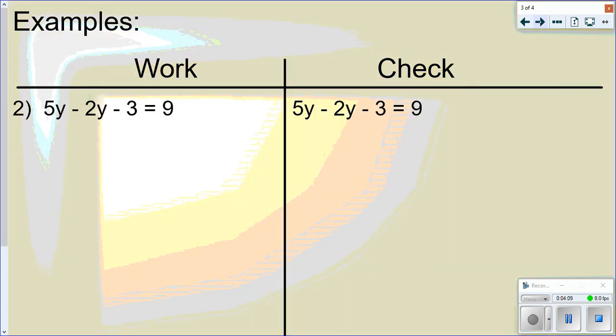All right, let's look at another one. Step 1 is to distribute if the distributive property is there and it is not there. Step 2 is to combine like terms. So I do have like terms that I can find here. This 5y minus 2y, I can combine to make 3y. So now I have 3y minus 3 equals 9.